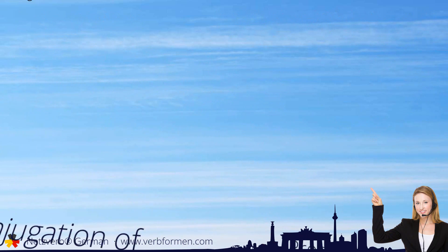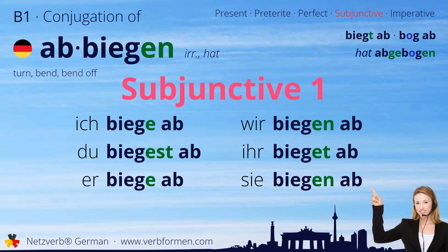Next up is the subjunctive one. Ich biege ab. Du biegest ab. Er biege ab. Wir biegen ab. Ihr bieget ab. Sie biegen ab.